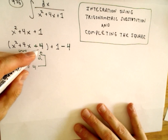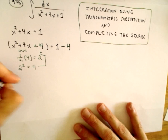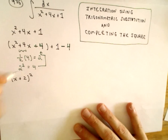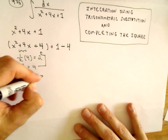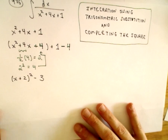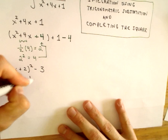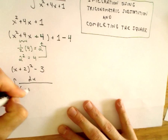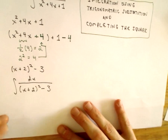So x squared plus 4x plus 4 factors as x plus 2 times x plus 2. I'm going to write that as x plus 2 squared, plus 1 minus 4, which gives us negative 3. So now I'm integrating dx divided by the quantity x plus 2 squared minus 3.